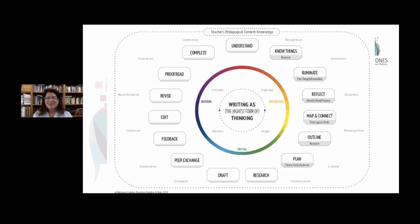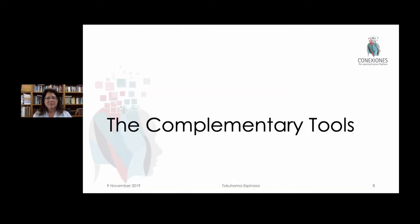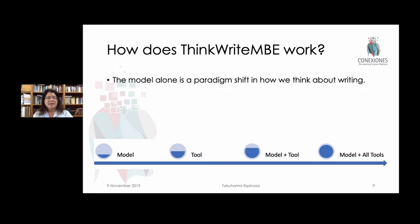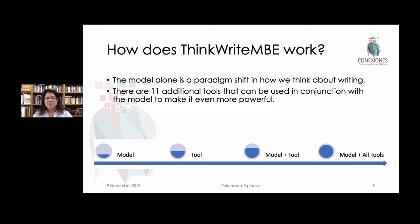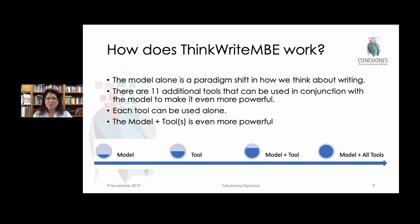So that's our model. Now let's look at some of the tools that can be used to complement the existing model. There are 11 different tools. The model itself is a paradigm shift in thinking about writing, but when combined with these additional tools, it can be even more powerful. Each of the tools could also be used on their own and the model could be used on its own, but when combined, it's actually a more encompassing proposal.